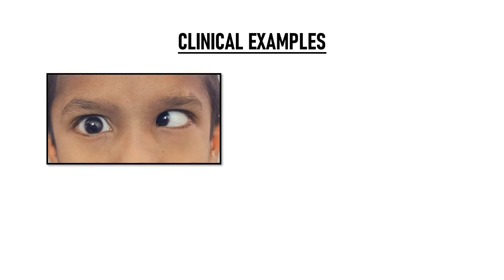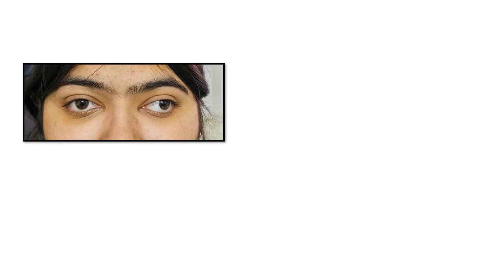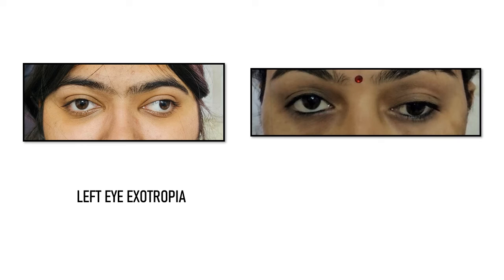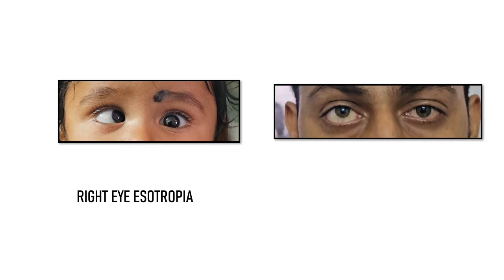Now let us quickly revise this with the help of some clinical examples. This is left eye esotropia. Then this is right eye exotropia. This is left eye exotropia. And now what is this? This is left eye hypotropia. This baby has right eye esotropia. And this next patient has right eye hypertropia.